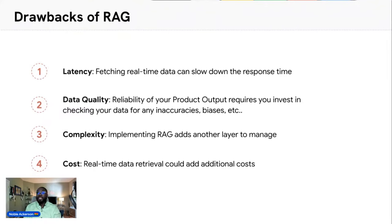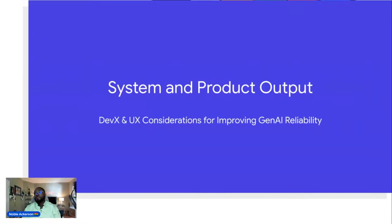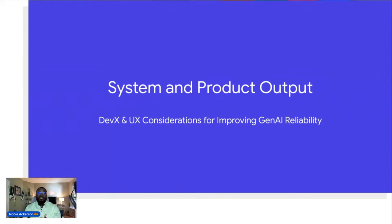Now let's talk about the system output and product output. You've employed methods to address missing or inconsistent data and added a pipeline. For the application pipeline and how your system interacts with humans, I swapped some code slides for something I'm researching for a book — the importance of speaking to these systems. Ilya Sutskever of OpenAI said the most powerful programming language is English — or more inclusively, language. But language and conversation are hard.